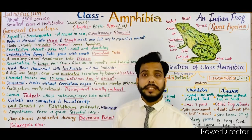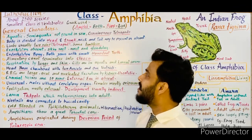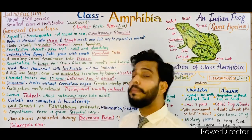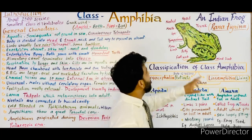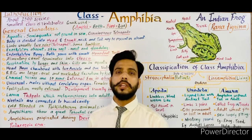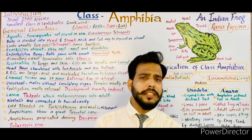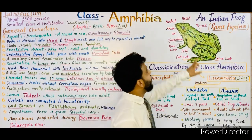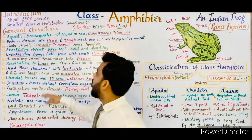Amphibians are tetrapods, meaning they have four limbs. The body is divided into head and trunk. Neck and tail may be present or absent. As seen in the diagram of a frog, the body is divided into head and trunk — these are the two main parts. Tail or neck may be present in some cases, but most amphibians consist of only head and trunk.